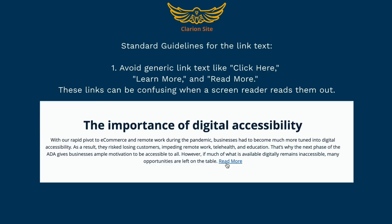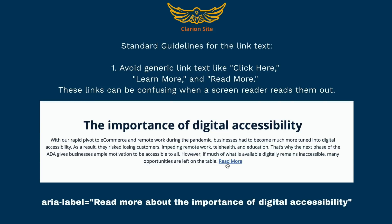As a result, a screen reader user will not be able to understand the meaning of this link when it is announced as "read more" without going through the surrounding text. A sighted user can understand this link's purpose, but it is still not fully accessible. To make it accessible for all, use the ARIA attribute to add a link description text. If aria-label equals "read more about the importance of digital accessibility" is defined for this link, it will pass the link purpose in context success criterion.